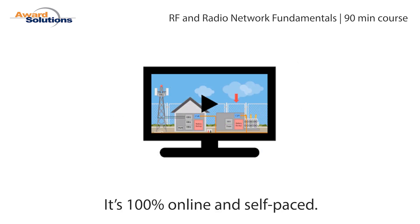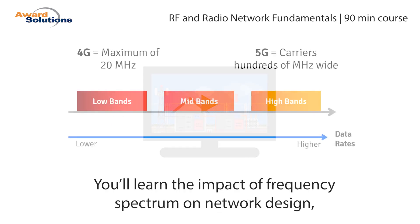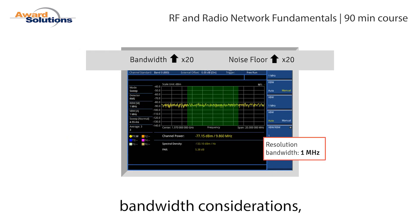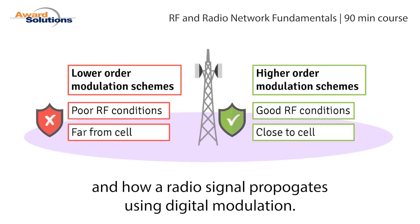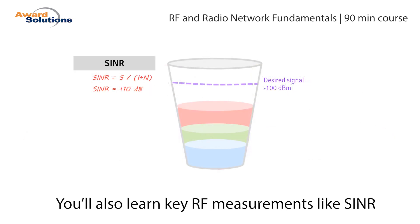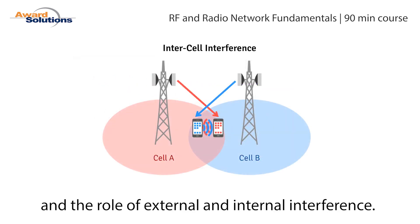It's 100% online and self-paced. You'll learn the impact of frequency spectrum on network design, bandwidth considerations, and how a radio signal propagates using digital modulation. You'll also learn key RF measurements like SINR and the role of external and internal interference.